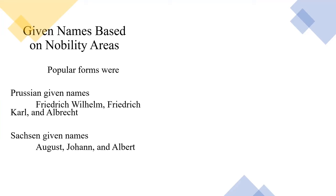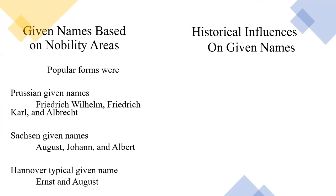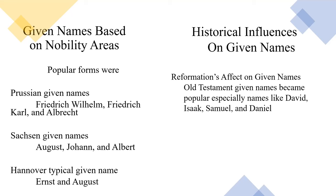Examples of Saxon given names included August, Johann, and Albert. Hanover typical given names included Ernst and August. This may add verification as to the area of Germany an ancestor was from, but by itself it does not prove it. During the Reformation, Old Testament given names became popular, especially names like David, Isaac, Samuel, and Daniel.